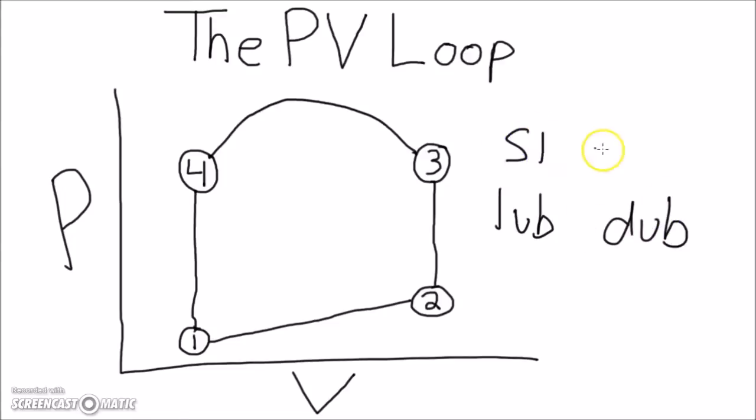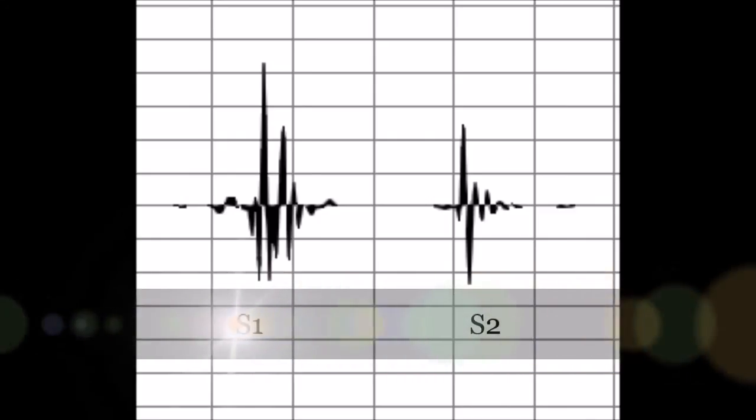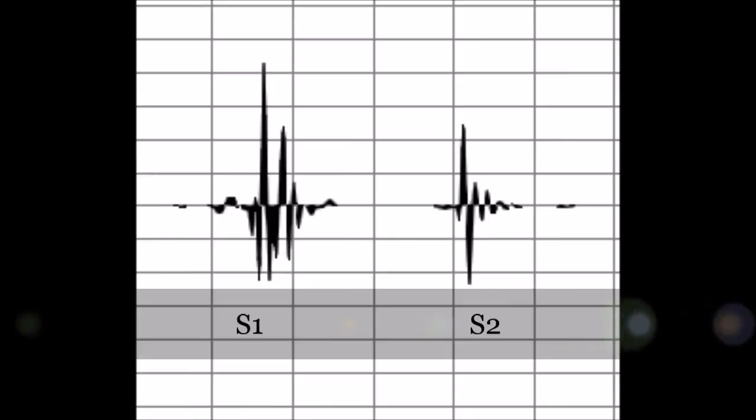These are known as the S1-LUB and the S2-DUB sounds. If you notice, the lub-dub sound has a short pause between the S1 and the S2, and a long pause before the next heartbeat.